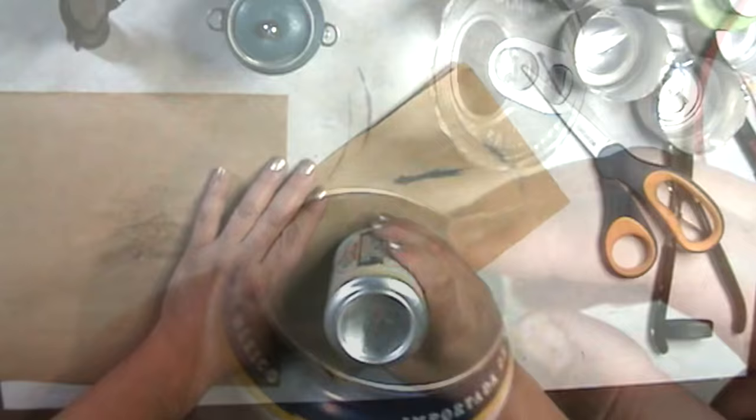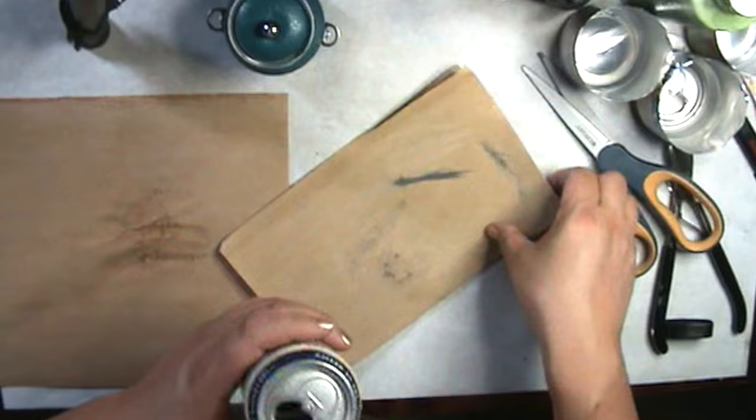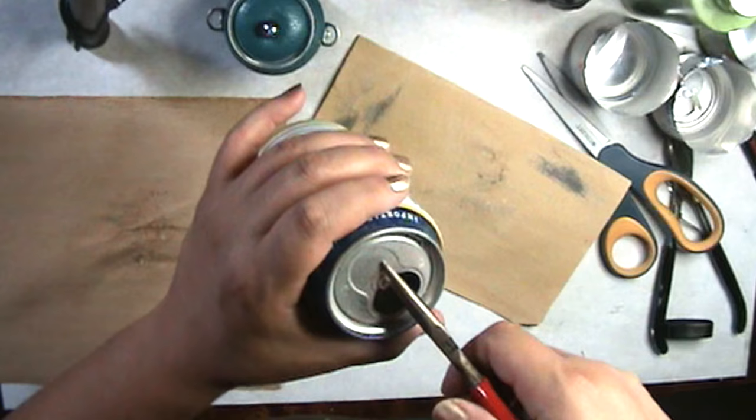We're going to start out by cutting the top off the can like this. This is the easiest and fastest way to do it, but if you don't have a can opener or you can't find one, you can do it this way. This way you can just sand the very top of the can and it does take a little bit of elbow grease, but it does get the job done.